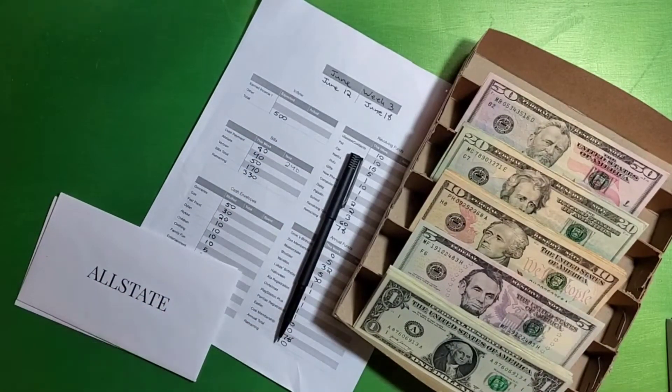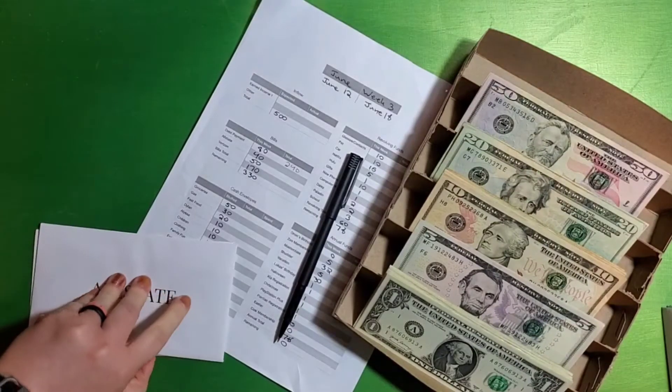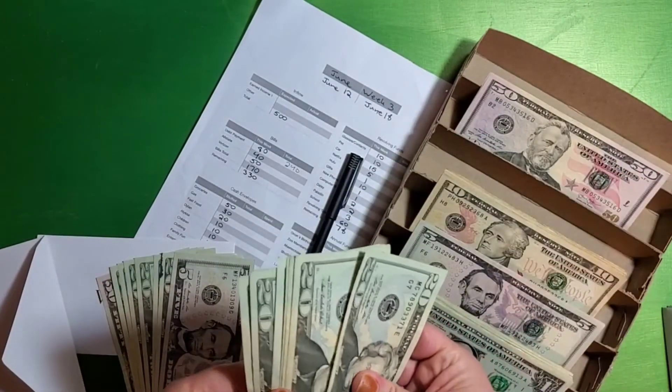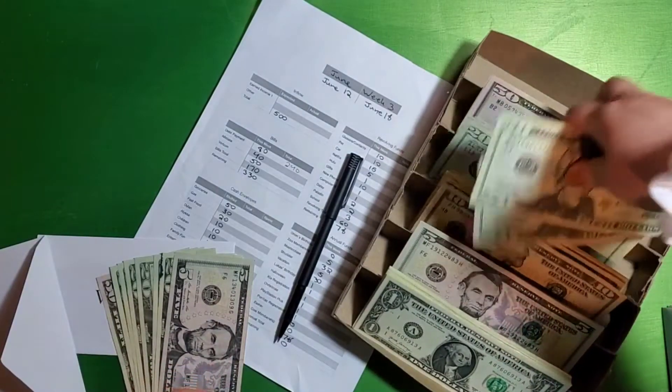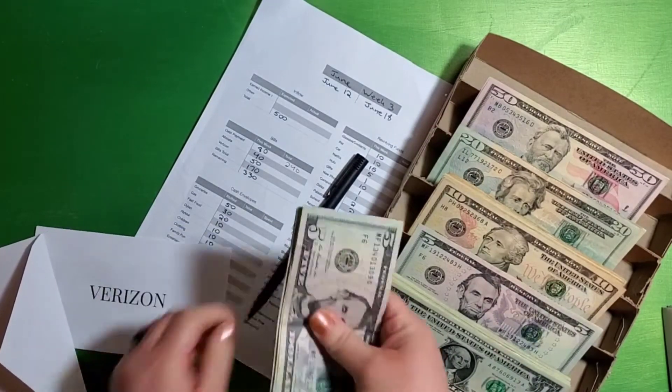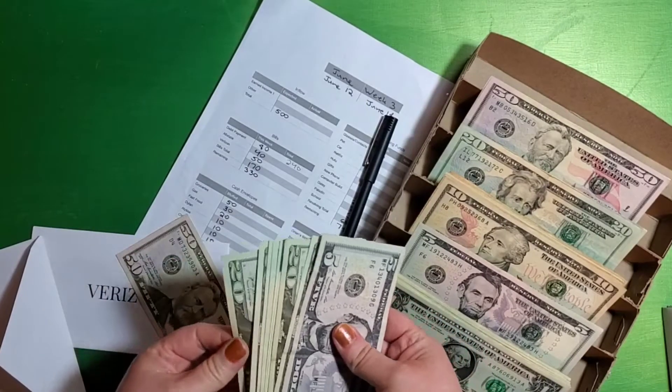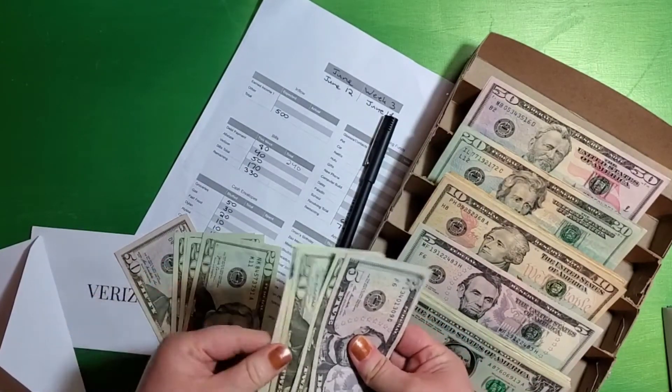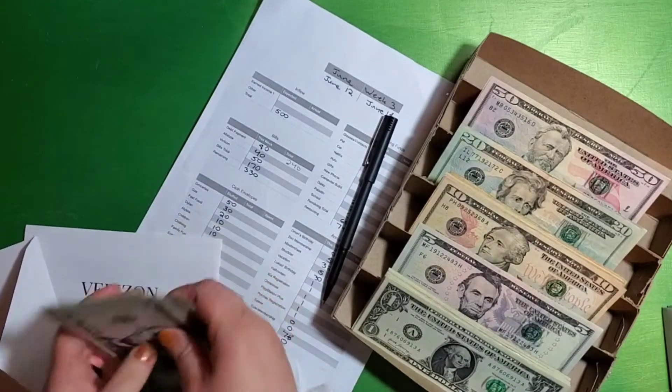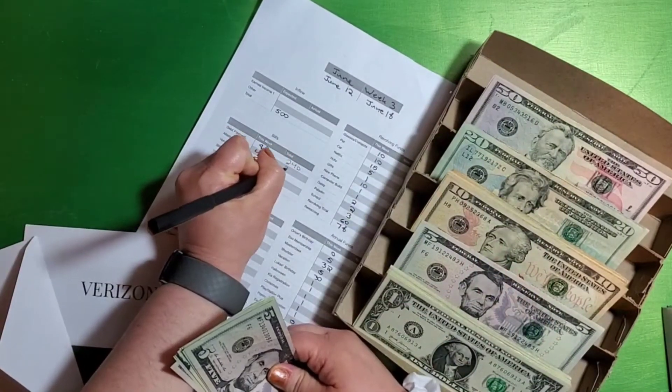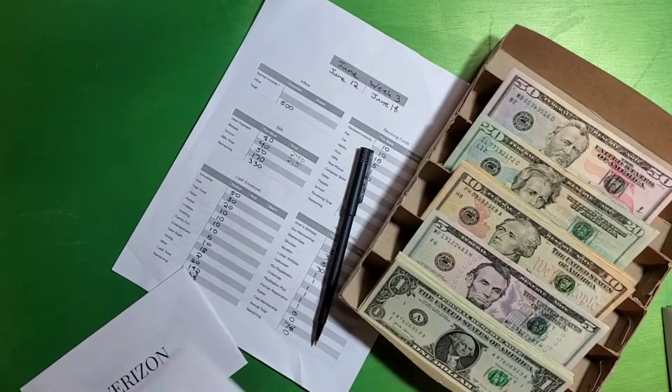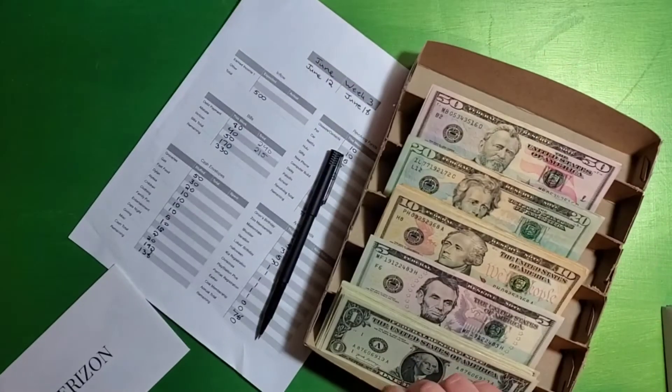Currently $240 in there. Allstate, we did decide to go ahead and pay the full six months, so there's a certain amount in here that's all going to go into the bank. Then we'll continue stuffing $40 a week. That should have us ready to pay our next six-month payment down the line. $50, $70, $90, $110, $130, $150, $170, $190, $210, $215. I think I counted that right.